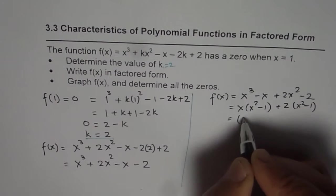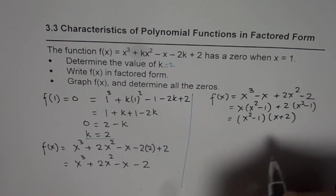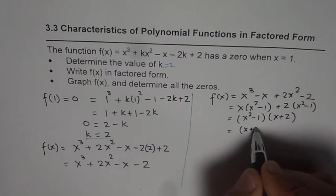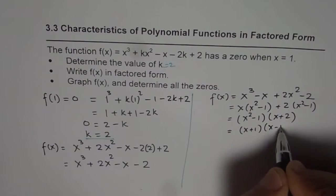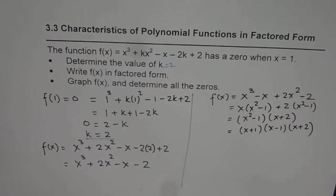Now x squared minus 1 is common, so we get x plus 2. You can factor x squared minus 1 as x plus 1 times x minus 1, and we have x plus 2. So that is the factored form.